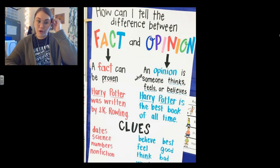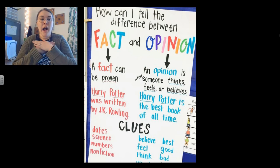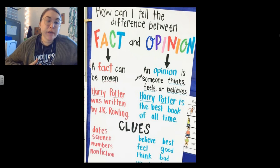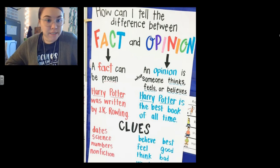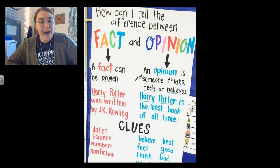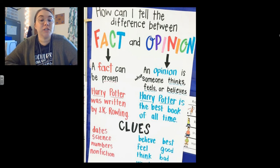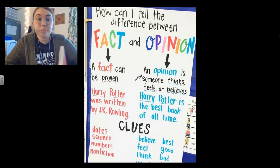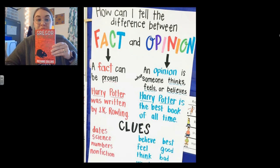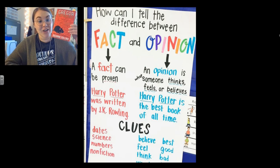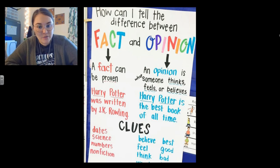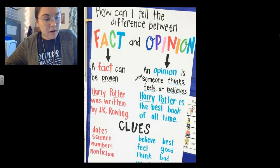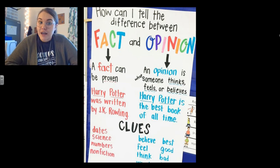An opinion would be 'you guys worked hard this six weeks' — that's your opinion. I think you guys work really hard. Now a fact would be: it is proven by science that students work better when they are given some free time or some brain breaks. So a fact is something that can be proven. Harry Potter was written by J.K. Rowling — we can look and see on the book who the author is. An opinion is something that someone thinks, feels, or believes. So 'Harry Potter is the best book of all time' — you might believe that or you might not. That's why it's an opinion.